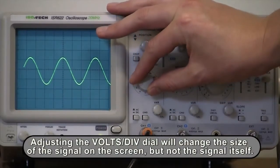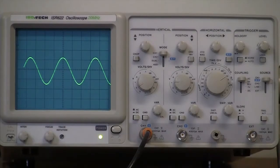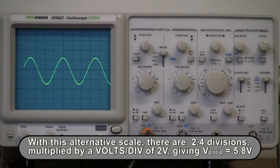Adjusting the volts per division dial will change the size of the signal on the screen, but not the signal itself. With this alternate scale, there are 2.4 divisions multiplied by a volts per division of 2 volts, giving a peak-to-peak voltage of 5.8 volts.